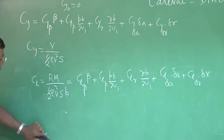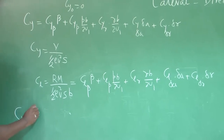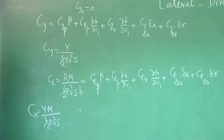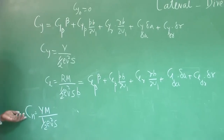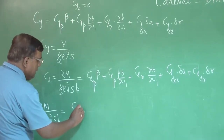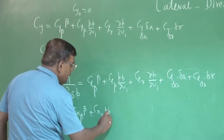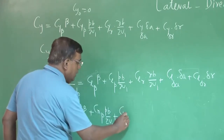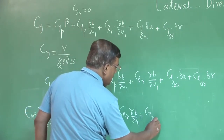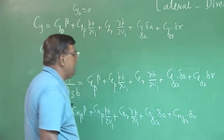Similarly, I can write for yawing moment coefficient Cn, which is the yawing moment non-dimensionalized with half rho v-squared times s times b (directional case uses b). So: Cn = Cn_beta times beta plus Cn_p times pb/2u1 plus Cn_r times rb/2u1 plus Cn_delta_a times delta_a plus Cn_delta_r times delta_r.